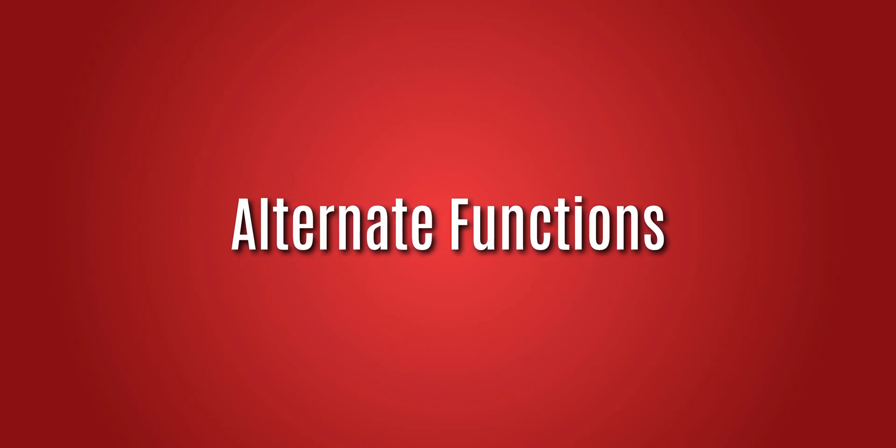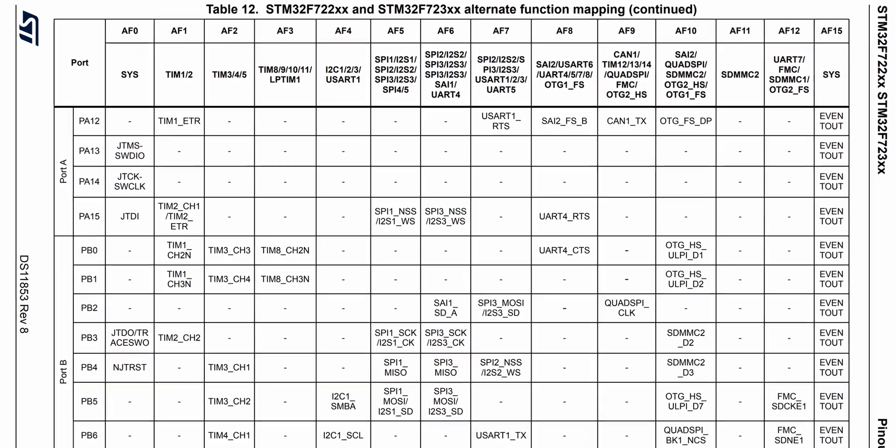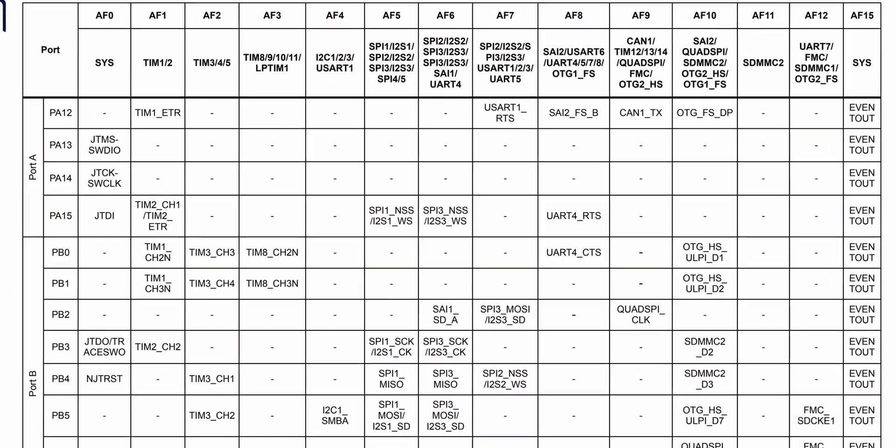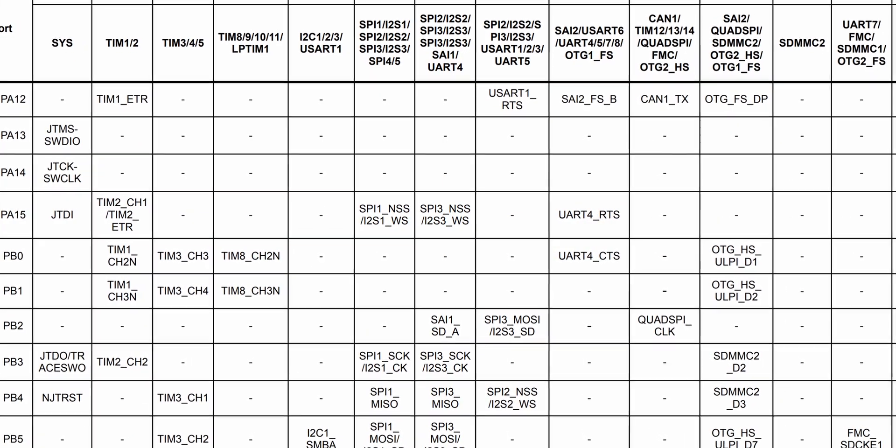In the STM32 nomenclature, those assignments are called alternate functions. Each GPIO can have up to 16 different alternate functions, from AF0 to AF15. What's very important: not every alternate function can be assigned to every pin. Some pins might have more alternate functions, some might have fewer, and the number of alternate functions available for every pin can vary.